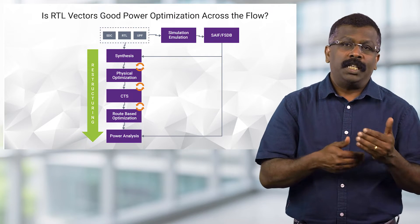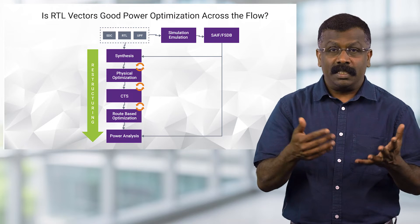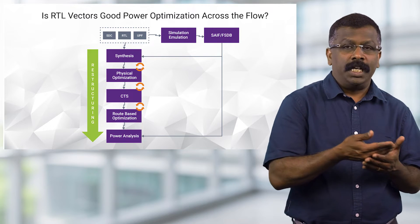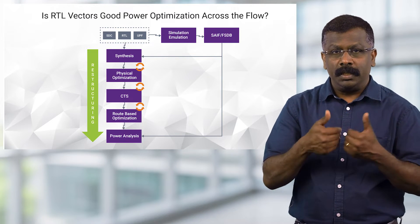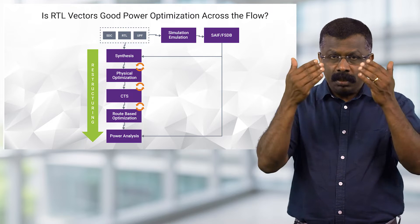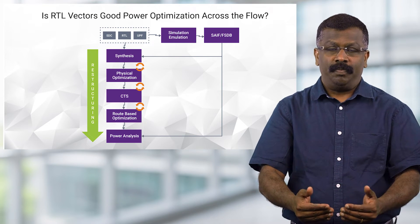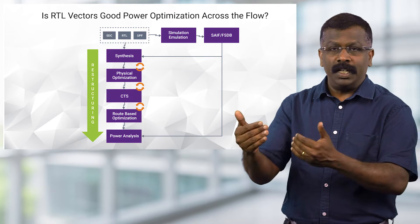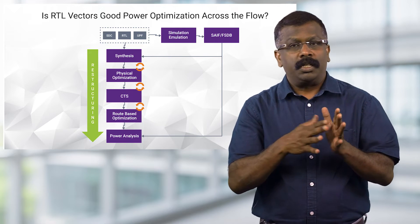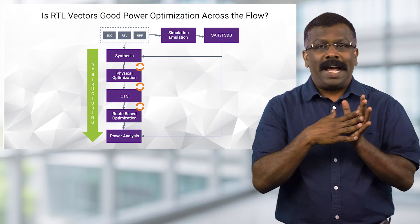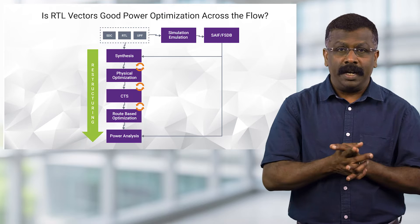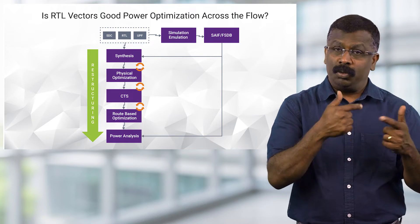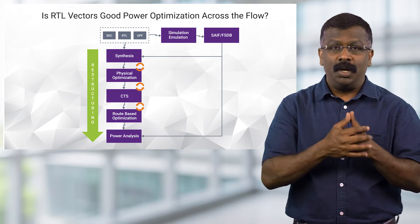If you look at the typical power optimization ASIC design flow, it involves feeding RTL simulation-based stimulus and optimizing the design using the same vector throughout the flow. What we ignore most often is that RTL simulation does not capture activities across all the nodes in the design, and the design keeps changing as we go through synthesis, place and route, and ECO.